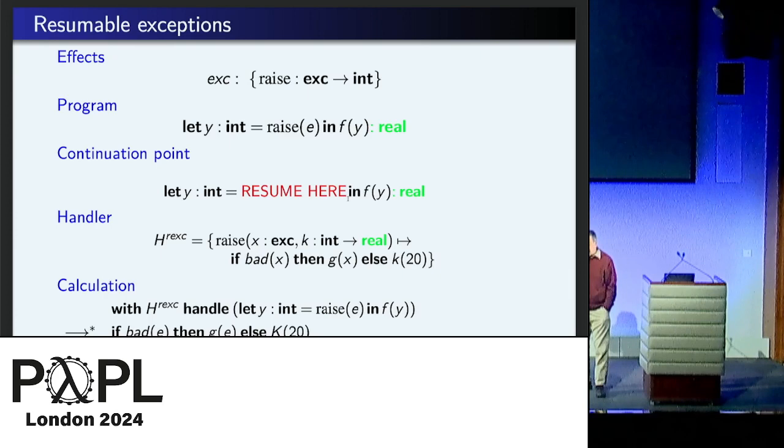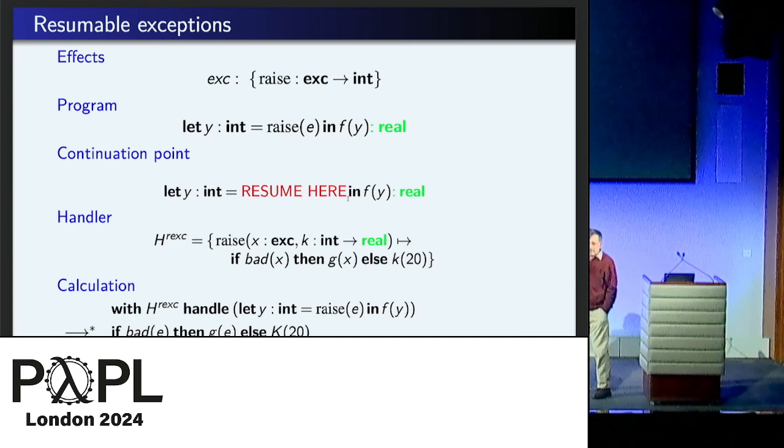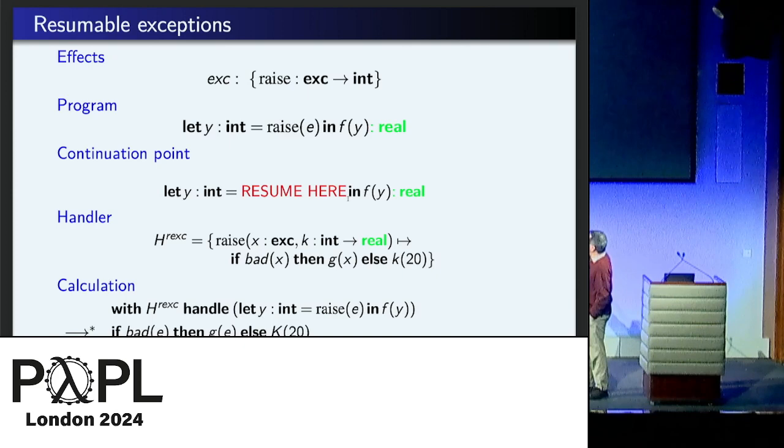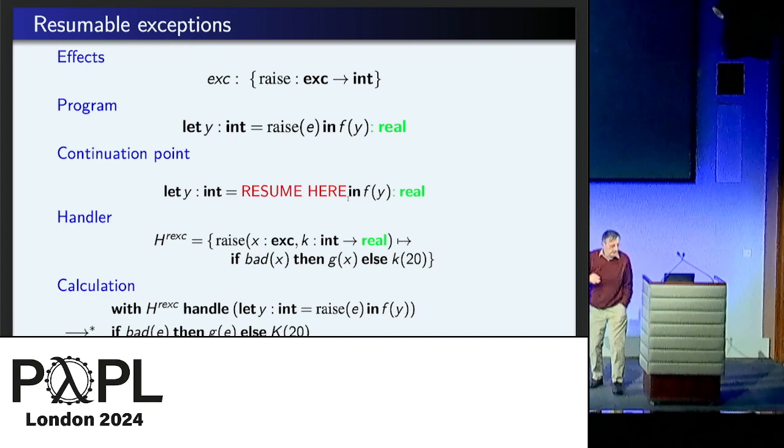So it divides what it does according to whether the exception is good or bad. If it's bad, you just give up and you do G like you're supposed to. But if it's good, you call K with something or others like 20. It doesn't really matter what. And so when you do the calculation, and assuming it wasn't bad, you call K with 20.